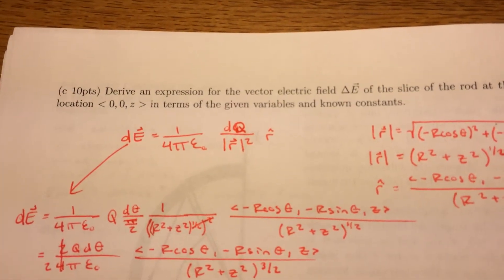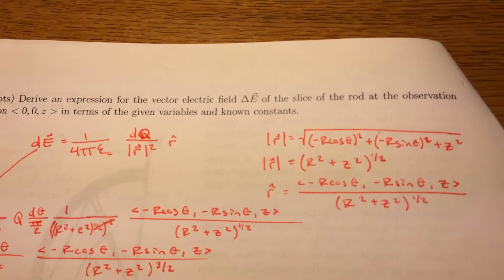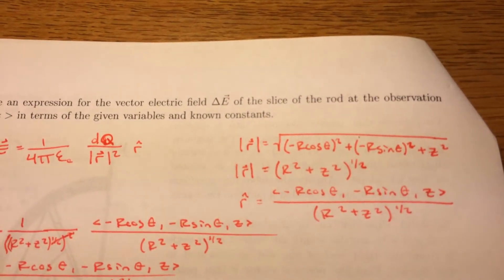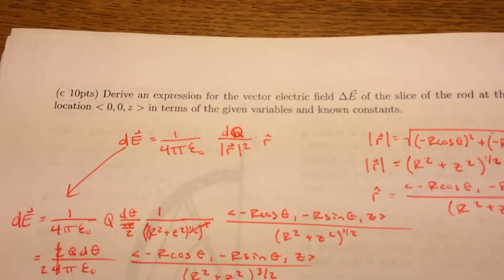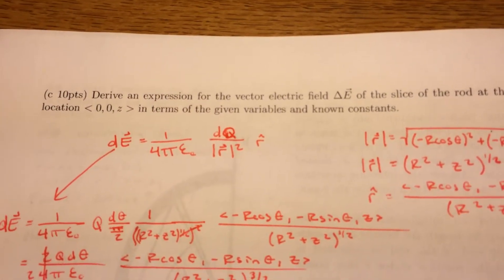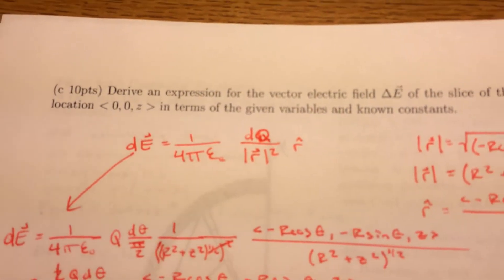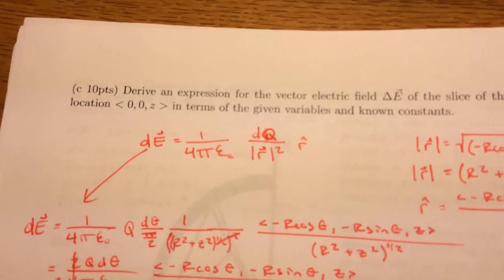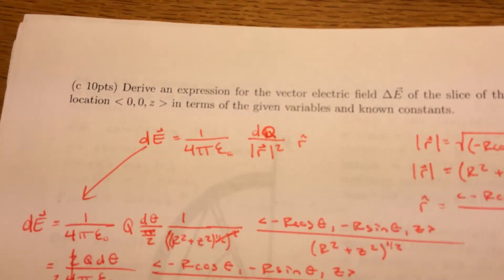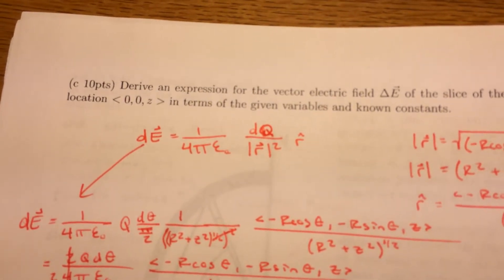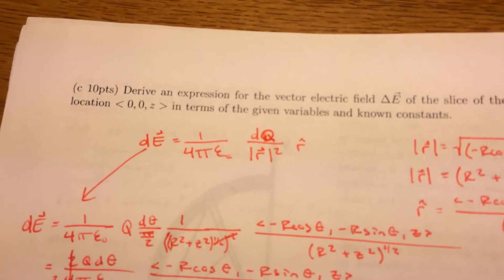Now we're going to derive an expression for the vector electric field delta E of the slice of the rod at the observation location, zero, zero, z, in terms of the given variables and known constants. Basically what we're going to do here is take the electric field equation, which is 1 over 4 pi epsilon naught q over magnitude of r squared times r hat.